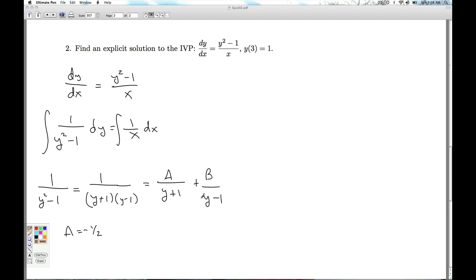For B, the term here, y equals one is bad. I cover up that factor. I plug one in. I get B is one-half. Or else you go through the normal partial fraction decomposition thing that you know and love. And we end up getting negative one-half over y plus one, plus one-half over y minus one for our partial fraction decomposition.